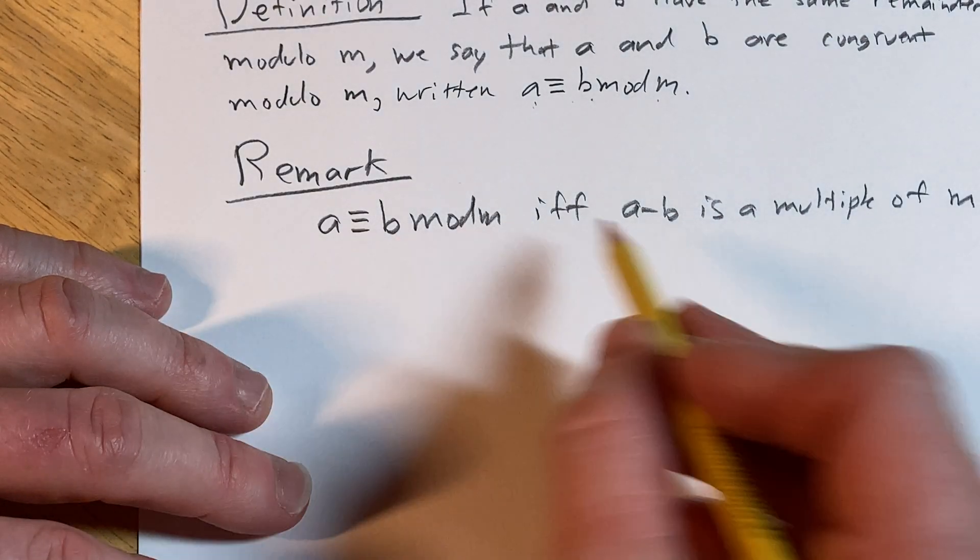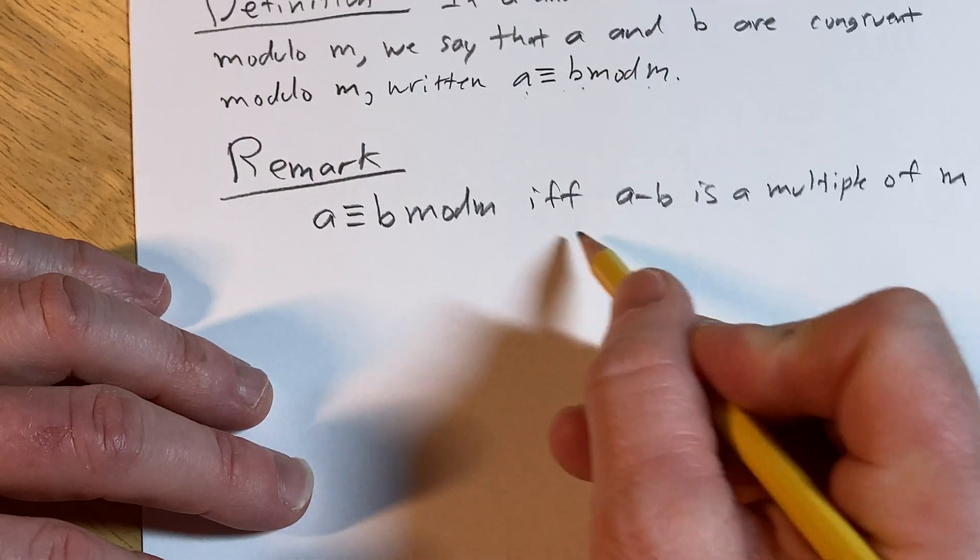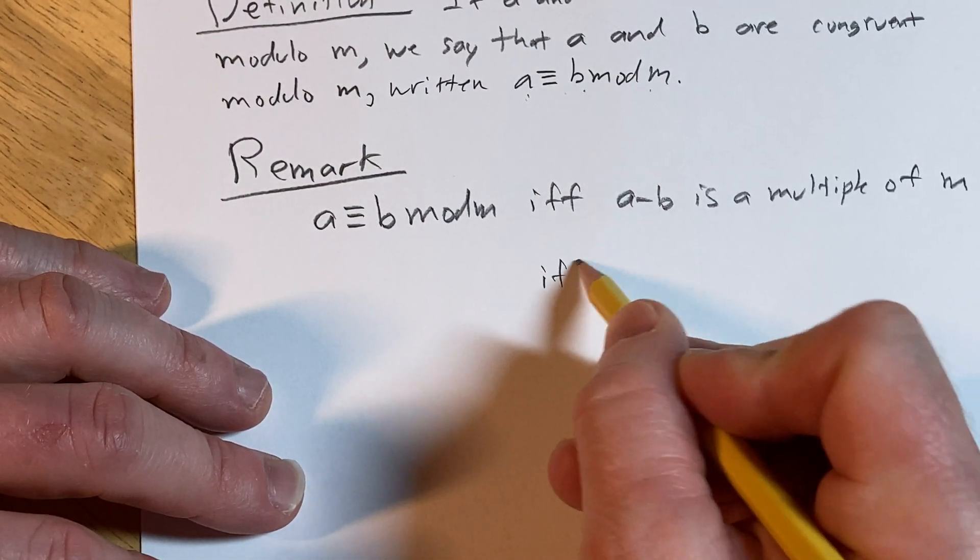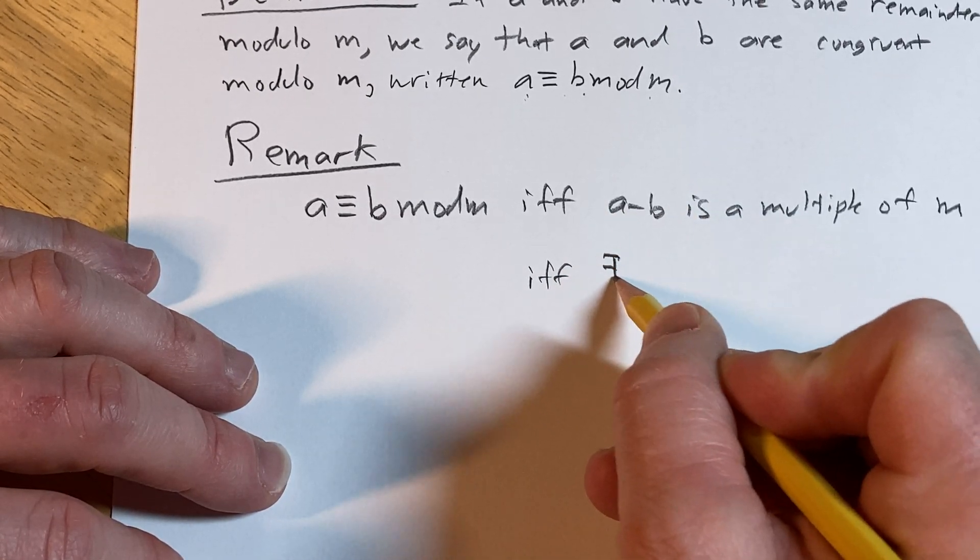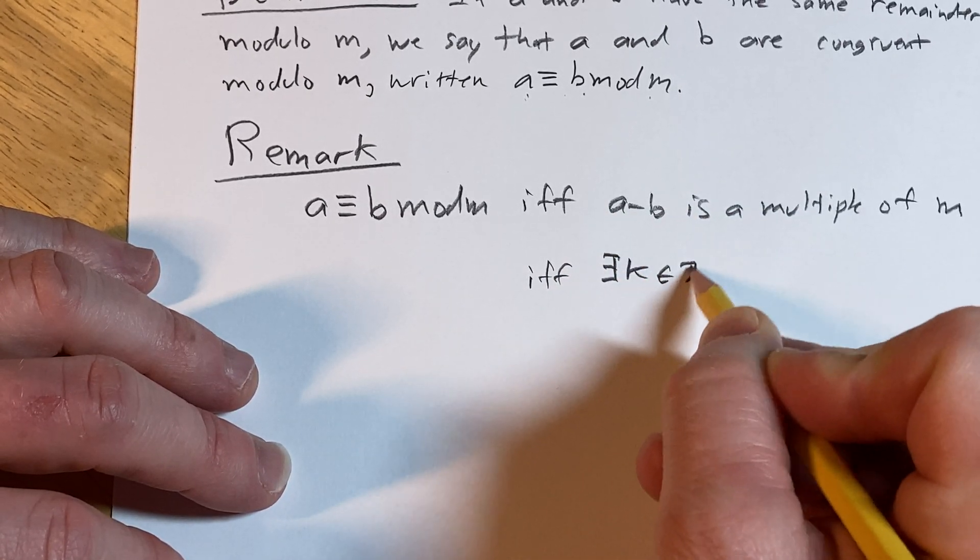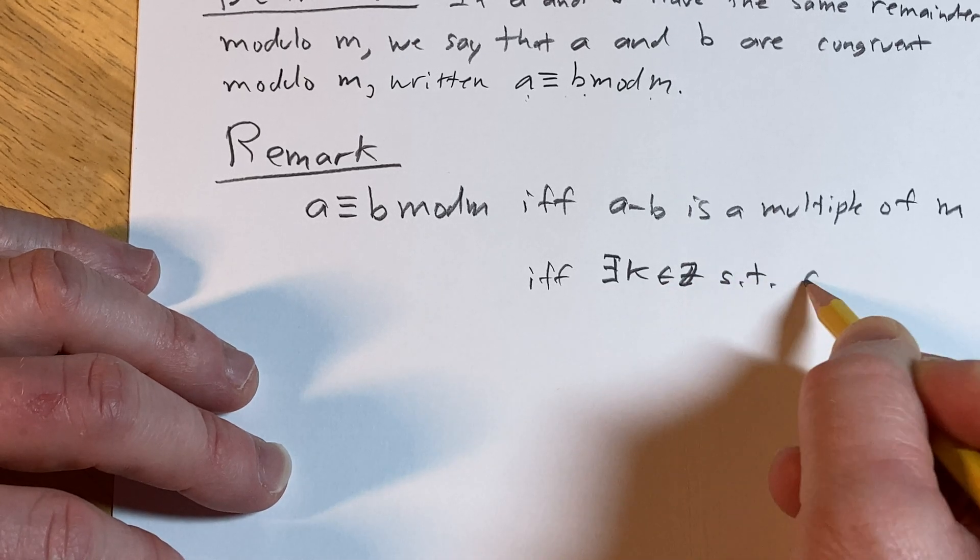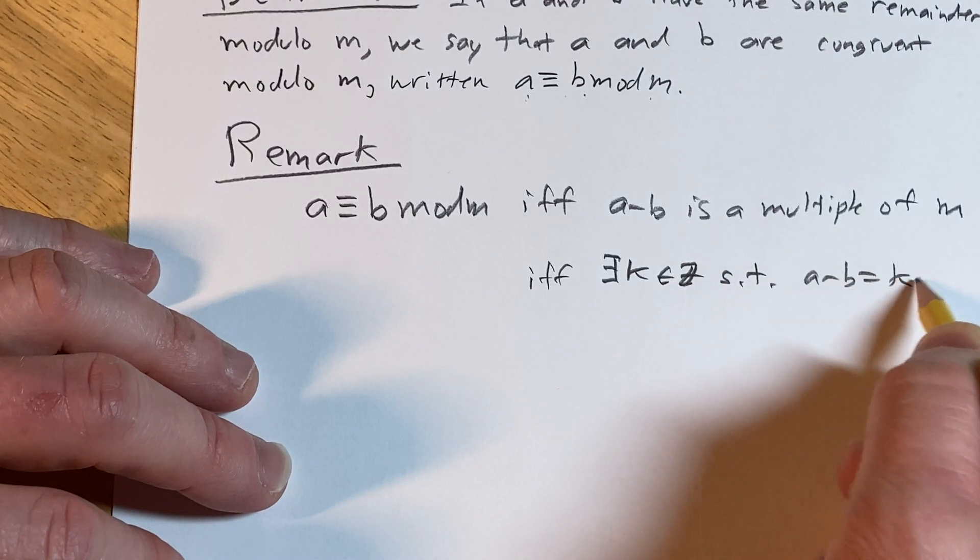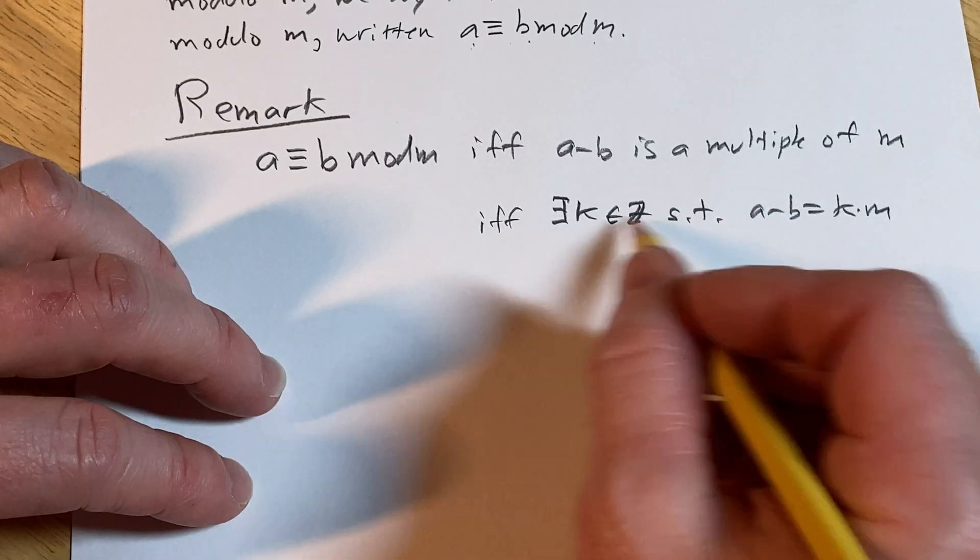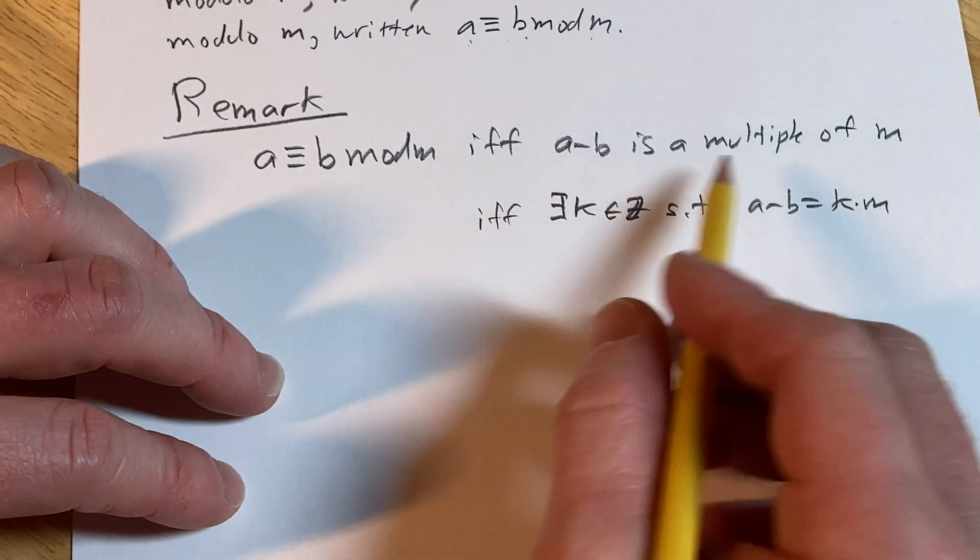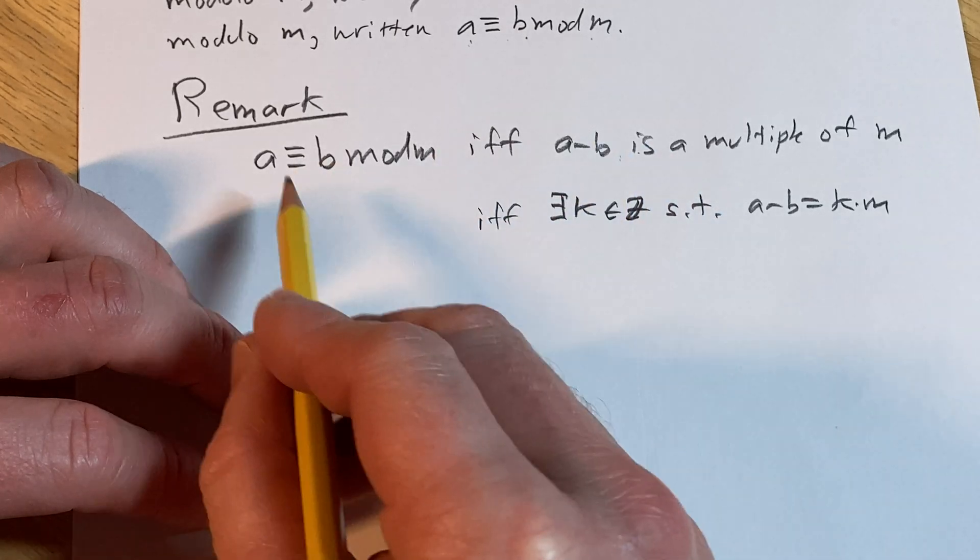What does this mean? This is if and only if there exists a k in Z such that a minus b equals k times m. That's what it means for a minus b to be a multiple of m - that there's some integer such that it's a multiple.